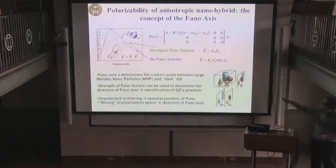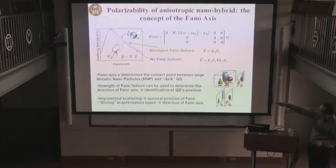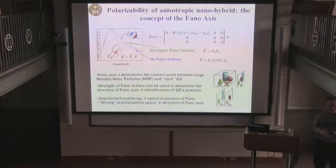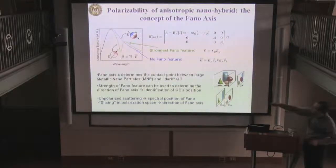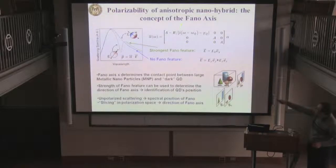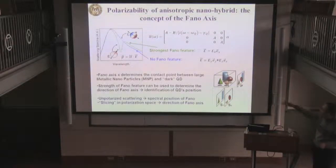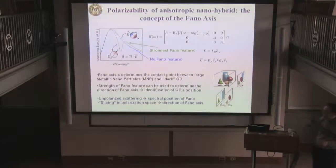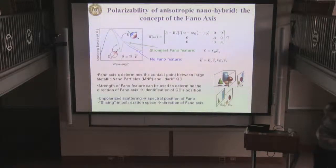To understand this mathematically is relatively simple. If the contact point between the nanoparticle and the quantum dot is along the X direction, we can introduce a polarizability of this combined system. This polarizability has trivial components — when the electric field is perpendicular so the quantum dot sees no field — and a non-trivial portion when the electric field is directed towards the quantum dot. If we rotate the polarization of incident light and track the magnitude of this Fano feature, we can figure out where the quantum dot is. I call this whole approach polarization spectrotomography.